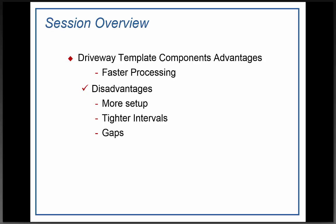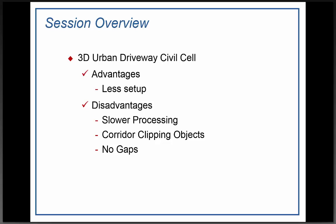What are the advantages and disadvantages of each? The driveway template component advantages: it will process faster in the long run. The disadvantages are that there's a little more setup, you have to have tighter intervals to have it look right in the model, and there will possibly be gaps without adding extra key stations. For the 3D urban driveway civil cell, the advantages are there's less setup — you basically add a couple of lines, a couple of profiles, and plot them. The disadvantages are that once you add them as clipping objects, your corridor will bog down considerably and be a lot slower to process, though you won't have any gaps.